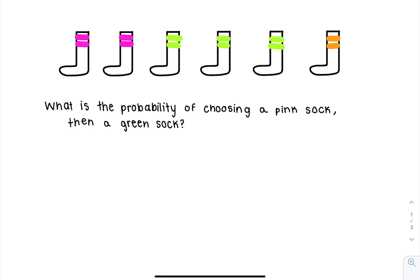So in this first problem, we've got two pink socks, three green socks, and an orange sock in a drawer. And so we want to know what is the probability of choosing a pink sock then a green sock.